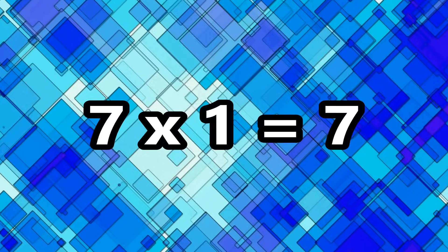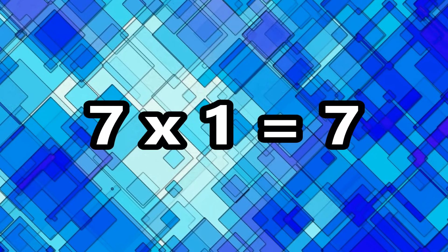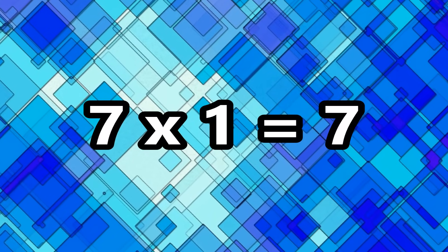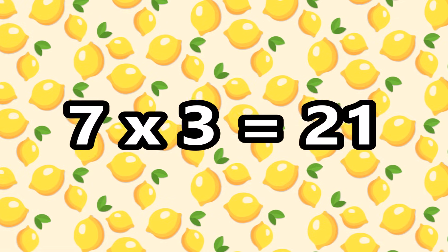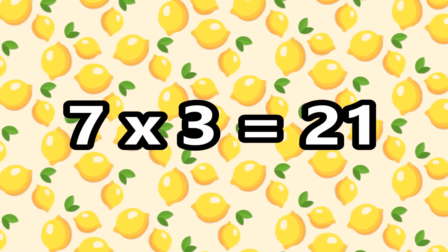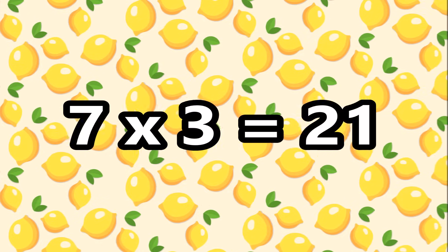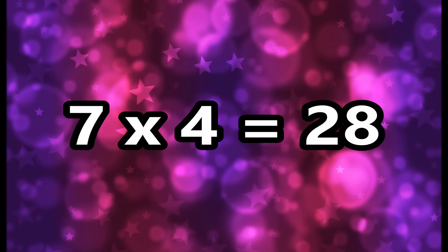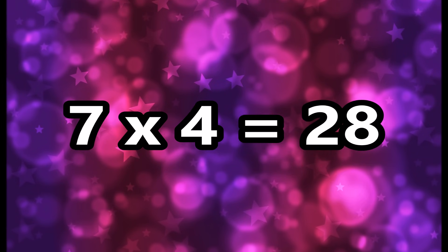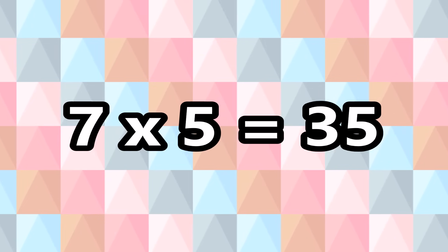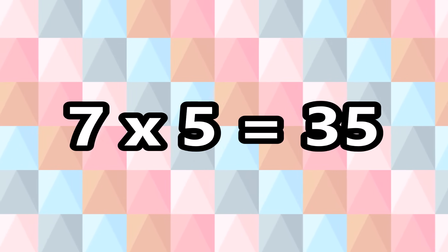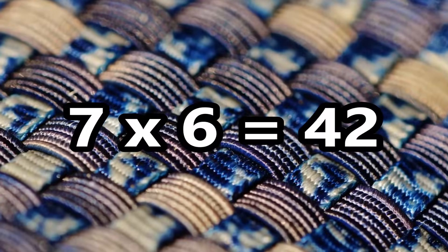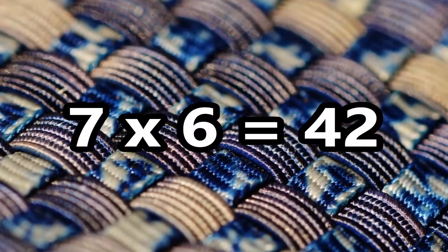7 times 1 is 7. 7 times 2 is 14. 7 times 3 is 21. 7 times 4 is 28. 7 times 5 is 35. 7 times 6 is 42.